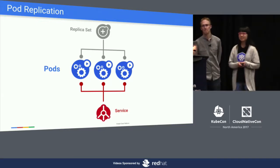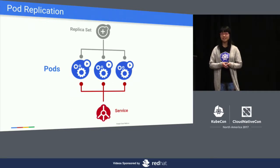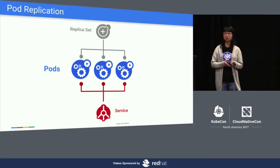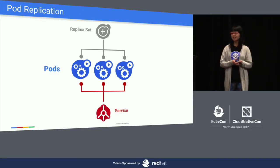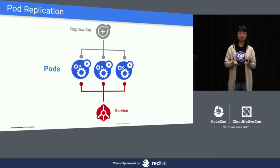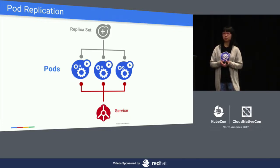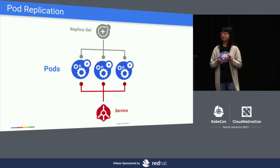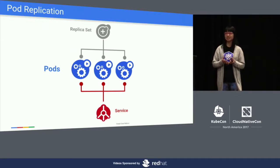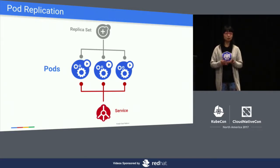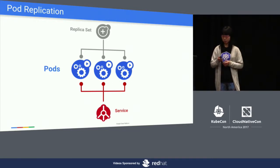One of the first automated healing mechanisms that new users of Kubernetes learn about is creating pods as part of a replica set, typically in a deployment. The controller manager will help you automate the process of keeping the desired number of replicas alive, so that even when your pod containers keep crashing due to a seg fault, memory leak, or some other application-specific bug, they can recover automatically.